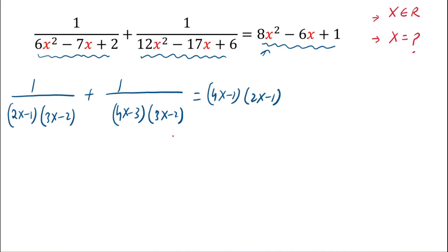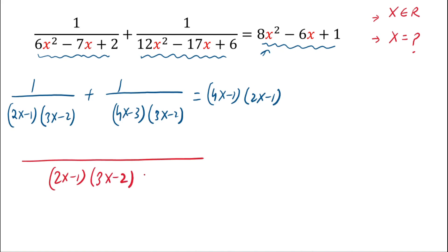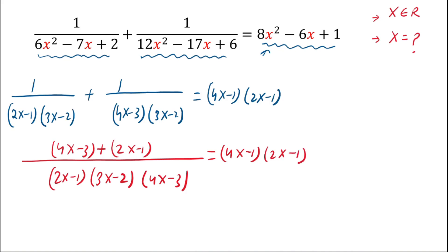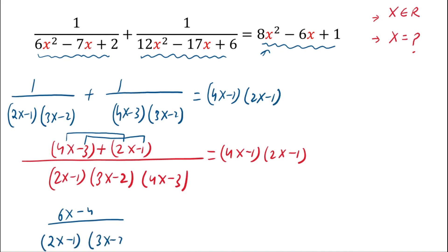The common denominator of the left-hand side is (2x - 1)(3x - 2)(4x - 3). In the numerator we have (4x - 3) plus (2x - 1), which equals (4x - 1)(2x - 1). Combining the numerator: 4x + 2x = 6x, and -3 - 1 = -4, giving 6x - 4 over (2x-1)(3x-2)(4x-3) equals (4x-1)(2x-1).